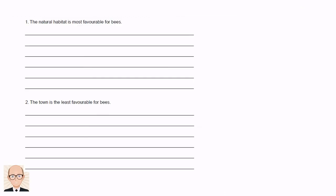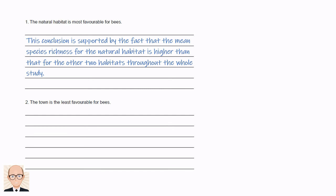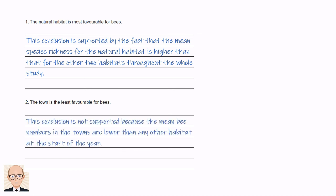We don't have to write all of this in our answer — we just need to choose whether we believe each conclusion to be correct and state some evidence to back that up. So writing something like this would get all available marks. We could say the first conclusion is supported by the fact that the mean species richness for the natural habitat is higher than that for the other two habitats throughout the entire study. We could say the second conclusion is not supported because the mean bee numbers in the towns are lower than any other habitat at the start of the year.